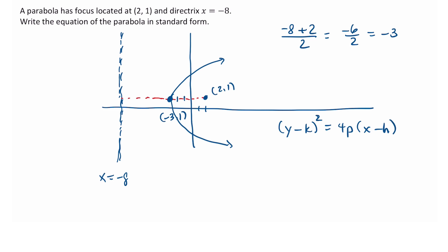We know from our picture, we just found the coordinates of the vertex. The coordinates are (-3, 1). So that means we have (y - 1)² equals 4 times something times (x - (-3)).